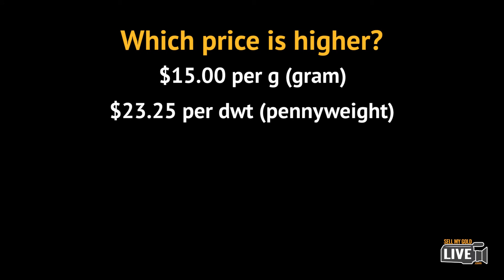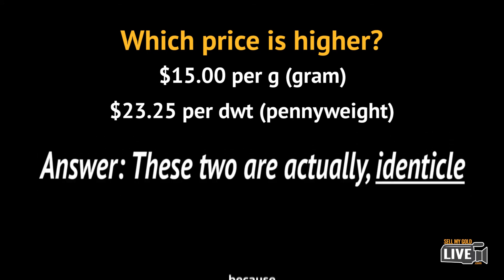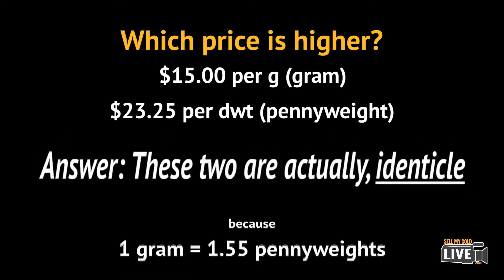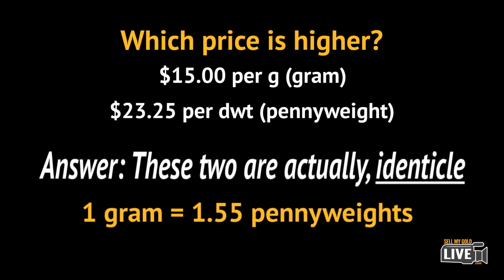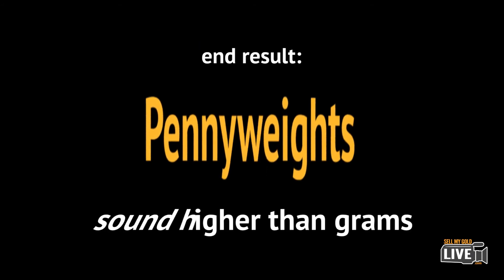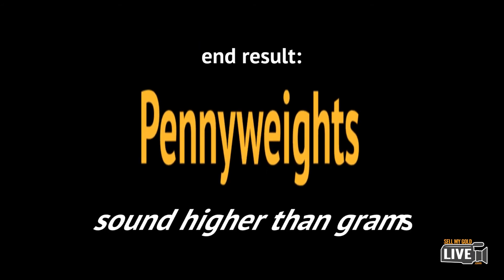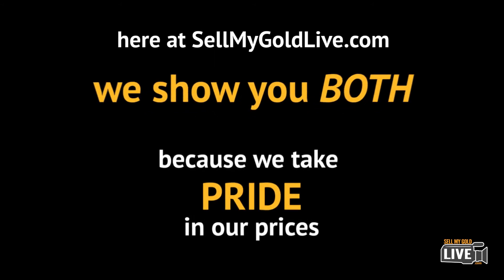The answer is they're the same price, because there are 1.55 penny weights in a gram. As a result, a price in penny weights sounds higher than the same price reflected in grams. But here at sellmygoldlive.com, we show you both grams and penny weights.